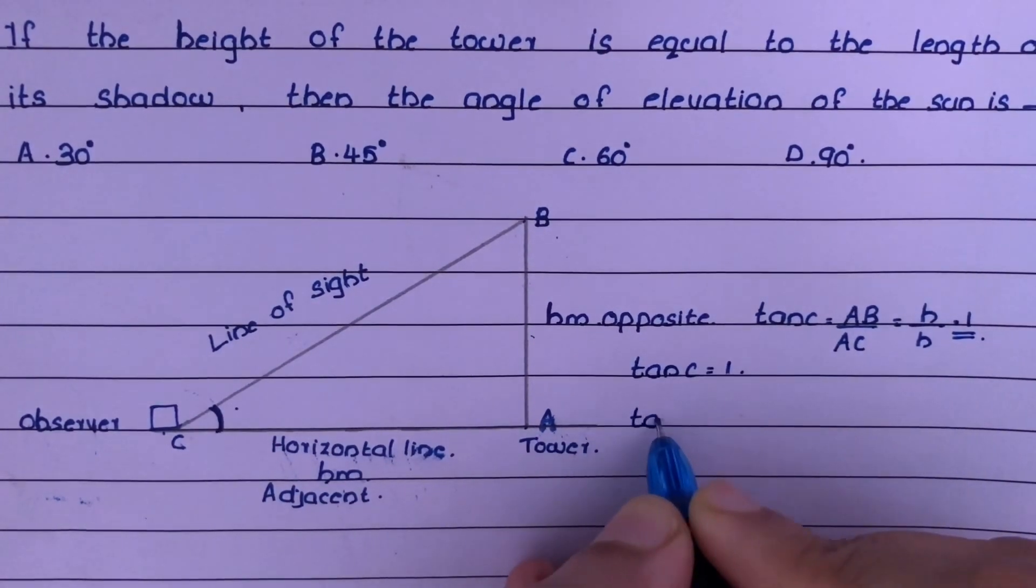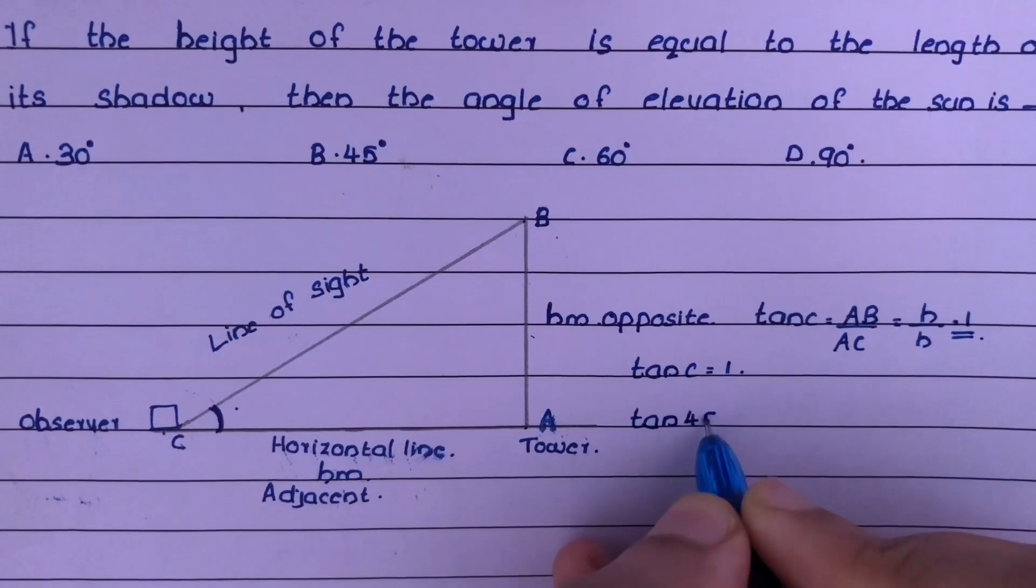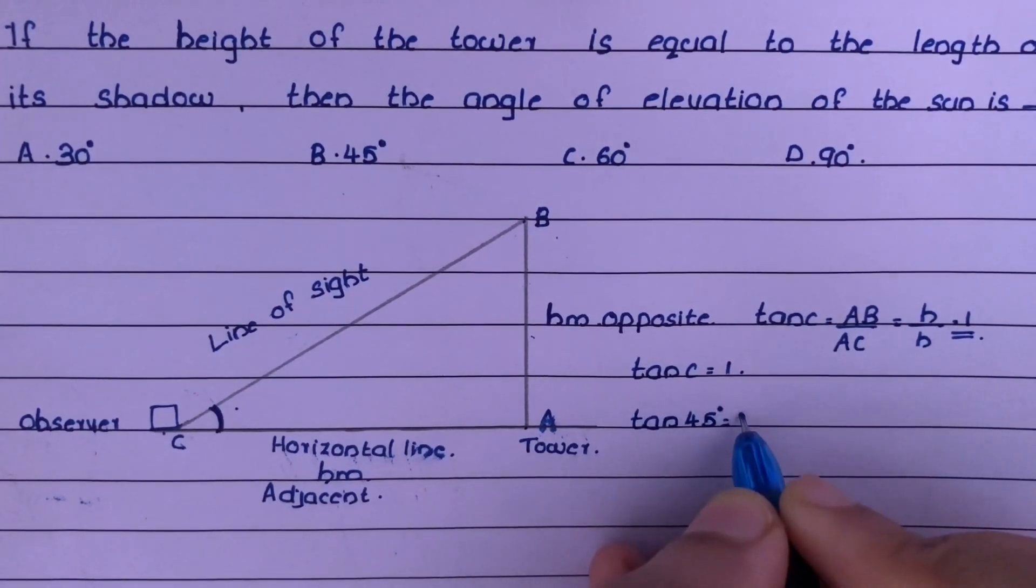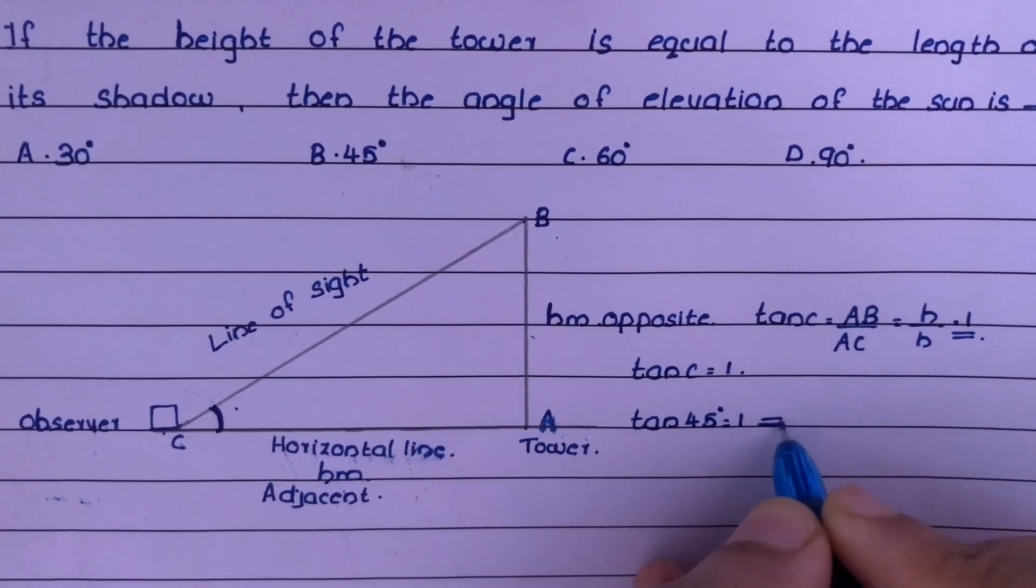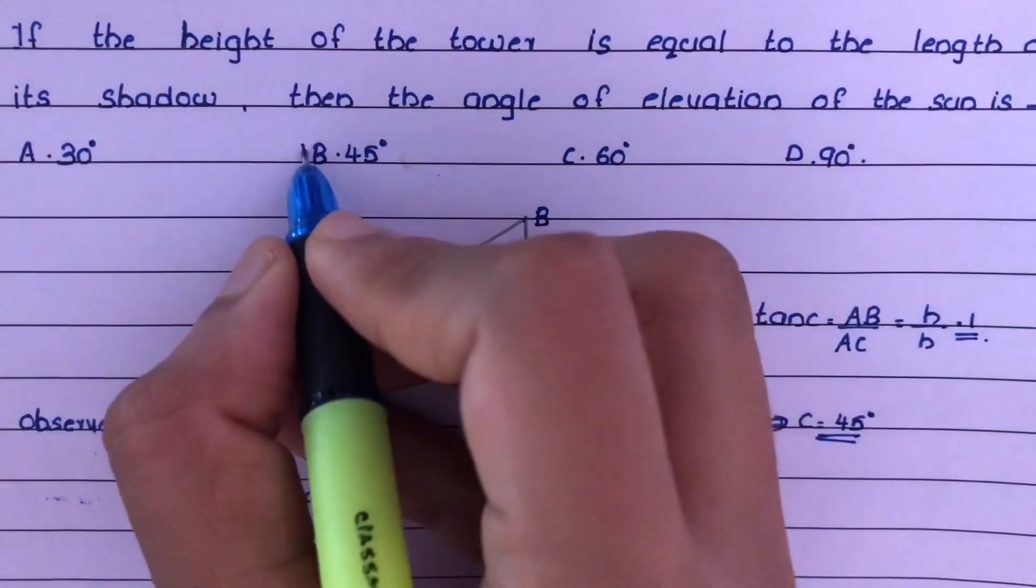And we know that tan 45 degrees is 1. So this implies angle C is equal to 45 degrees. Therefore, the answer is option B.